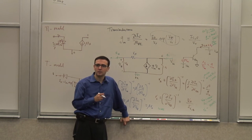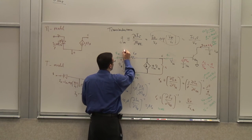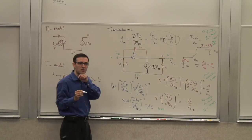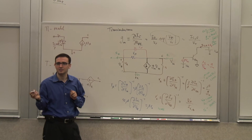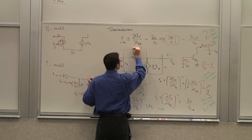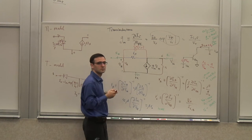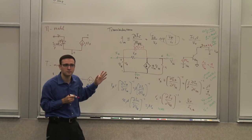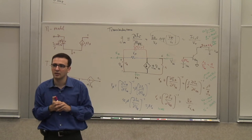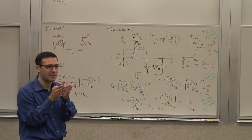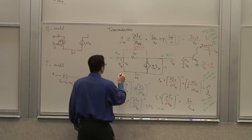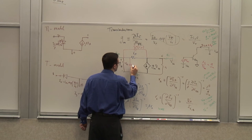There's a junction capacitance associated with each one of these junctions, so there are two capacitors to take into account. The base-collector one is CJC, often shown as Cmu. There's also a base-emitter junction — CJE. Even when you forward bias that junction, the depletion region doesn't go away, so there's still a junction capacitor there.